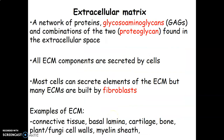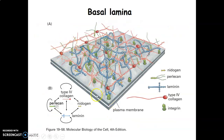The extracellular matrix is a network of proteins, glycosaminoglycans, and other proteoglycans in the extracellular space. It is usually secreted by cells, mainly fibroblasts. We see extracellular matrix in connective tissue, cartilage, bone, basal lamina, and so forth.